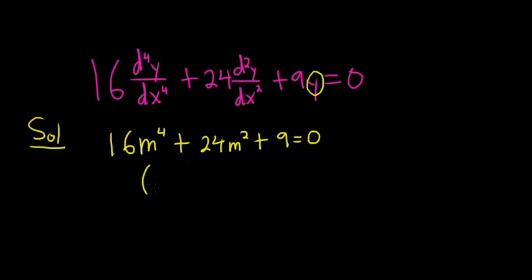I believe this should factor. Let's try it. So maybe this will be 4m squared and 4m squared, right? Because 4 times 4 is 16, and m squared times m squared is m to the fourth. Two numbers that multiply to 9 - let's try 3 and see if it works.